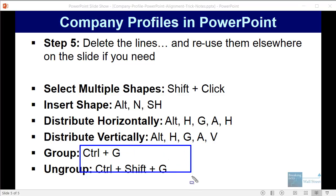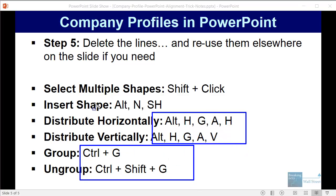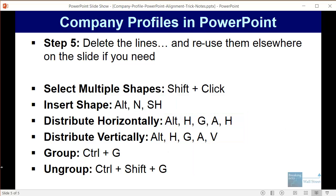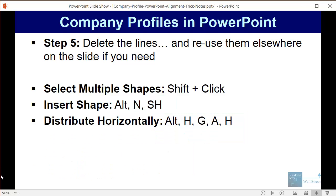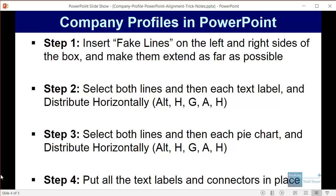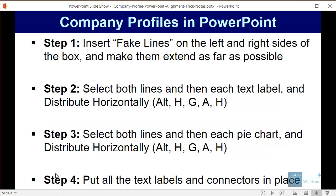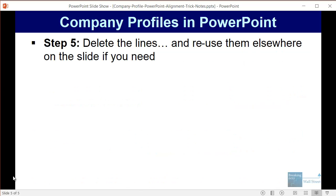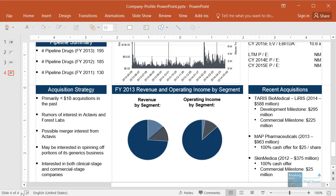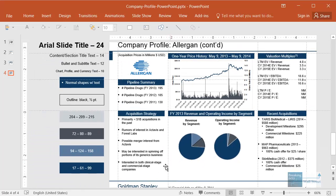The steps to do this once again: insert the fake lines, then select both lines and the text labels and distribute them horizontally. Then move the lines into position for the pie charts, select each chart and both lines, and distribute horizontally. Put all the text labels and connectors in place after that, and then delete the lines when you're done. Hopefully you now know a little bit more about alignment and distribution for creating company profiles in PowerPoint.